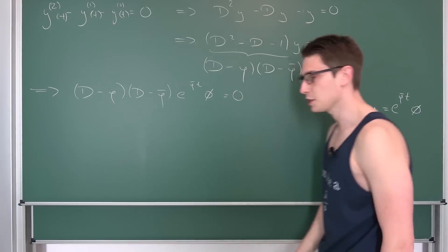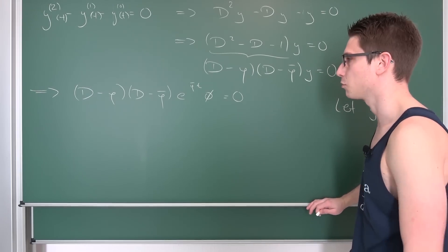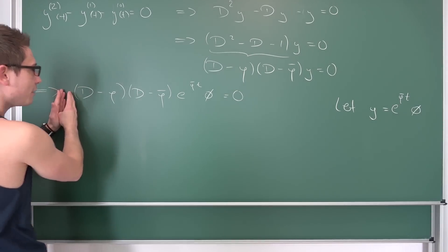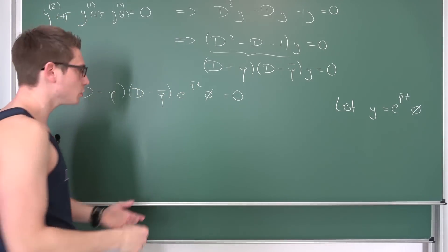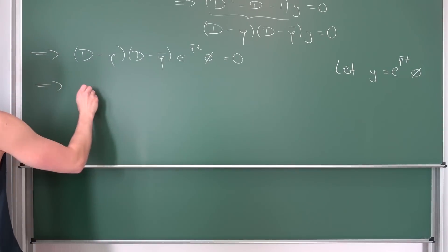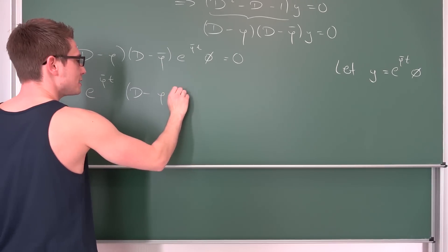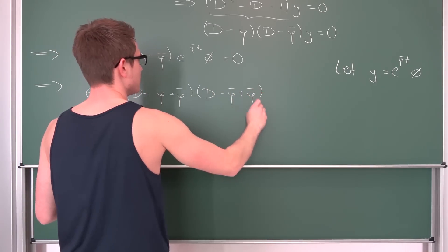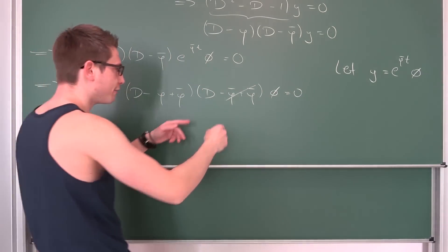Now we are going to make use of the shift theorem. The shift theorem tells us that we take this exponential factor, put it completely to the front, but then we add φ̄t into each of the linear factors. We eliminate the roots one after another. After using the shift theorem, we get e^(φ̄t) · (D minus φ + φ̄)(D minus φ̄ + φ̄) applied to φ equals 0. As you might notice, the second factor cancels out, and what we now have is just the differential operator acting on φ.